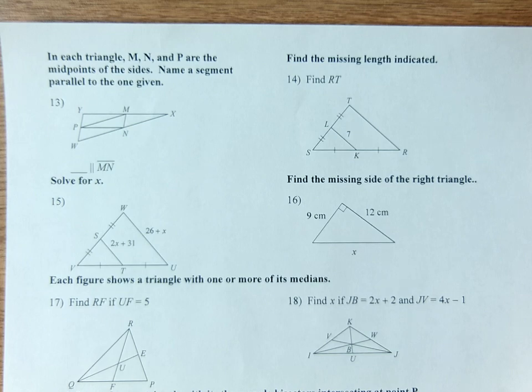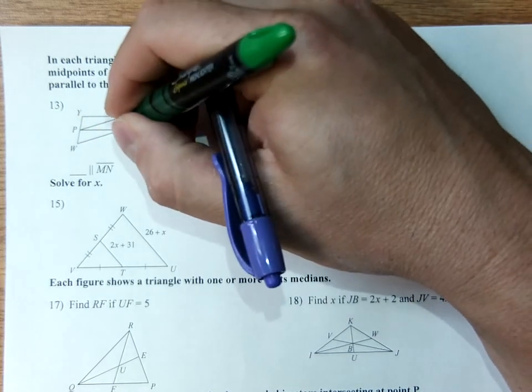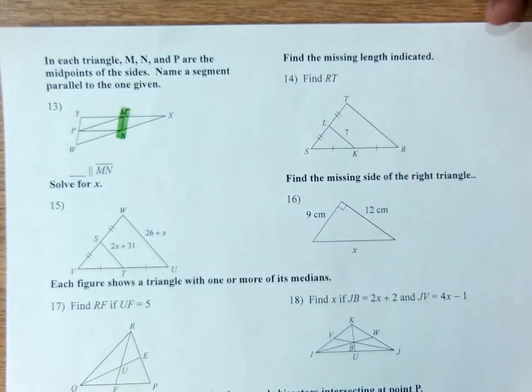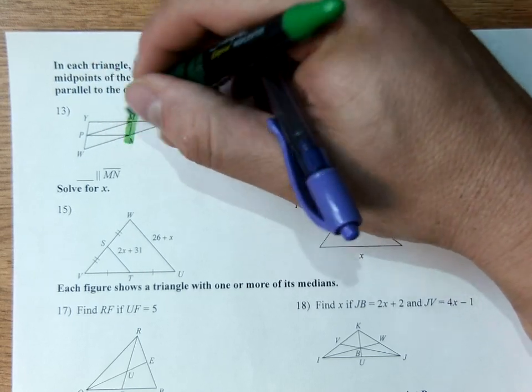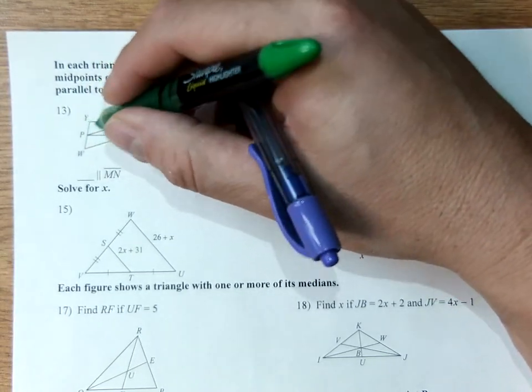Name a segment parallel to the one given. So MN. Well let's look at MN. Here's M to N. Which line on this diagram, or segment I should say, points the same way. YX doesn't look like it points the same way, that intersects it. Neither does PN. PM.